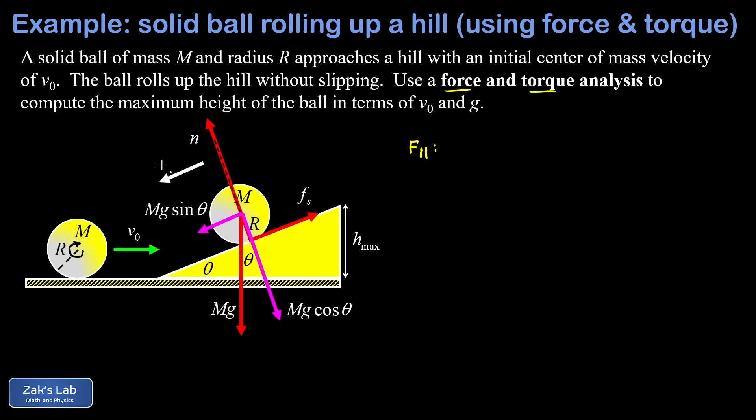Okay, so this little arrow with a plus on it indicates our chosen direction of positive for our coordinate system. So now doing a force analysis, we're just saying F net equals ma in the parallel direction.